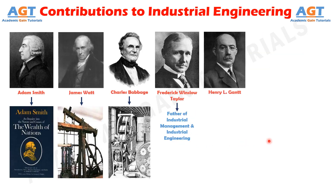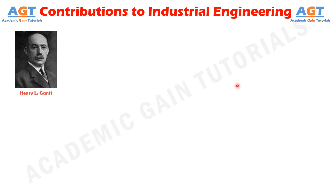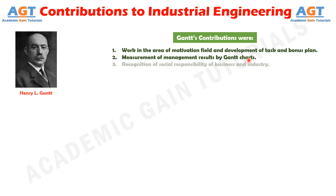Number 5, Henry L. Gantt. Gantt, who was an engineering contemporary of Taylor, had a profound impact on the development of management thinking. His contributions included work in the area of motivation field and development of task and bonus plan, which was a highly successful incentive plan; measurement of management results by Gantt charts; recognition of social responsibility of business and industry; and advocating training of workers by management.